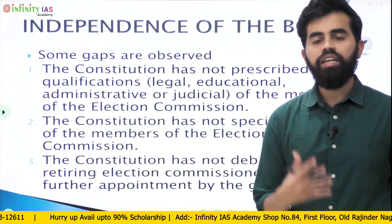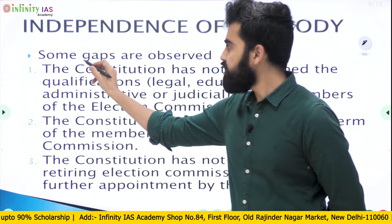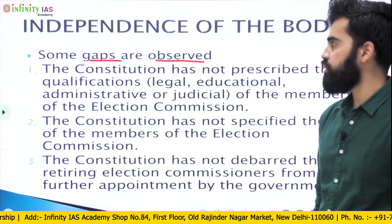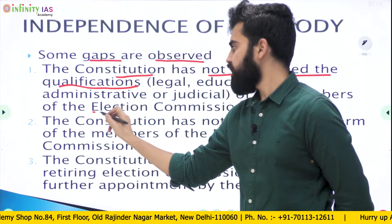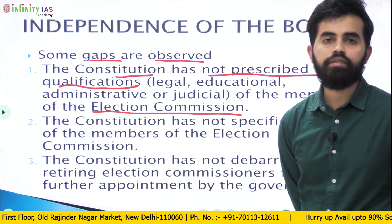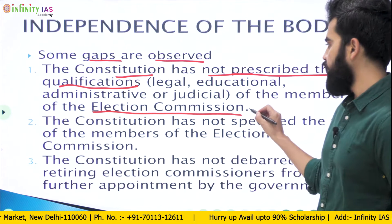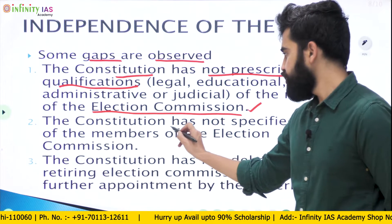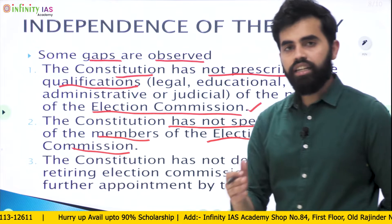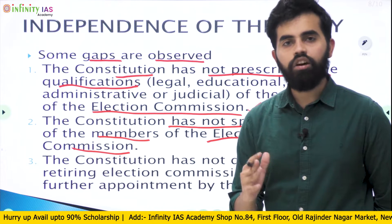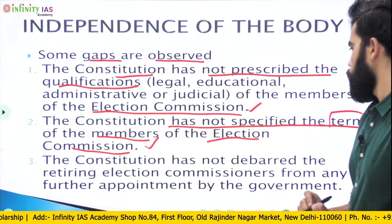We have seen certain conditions given in the constitution to ensure the independence of the election commission. But there are certain gaps observed in this independence. The constitution has not prescribed the qualifications required to be appointed as election commissioners, which leaves some gap for the government or the president to choose whom to appoint. Also, the constitution has not specified the term of the members of the election commission, so the term can be changed by the president and is not fixed by the constitution. This leaves some gap to ensure complete independence of the election commission.